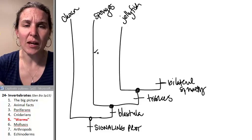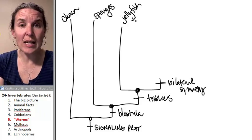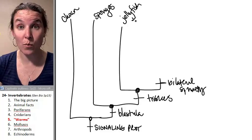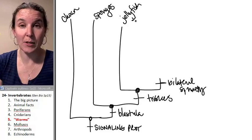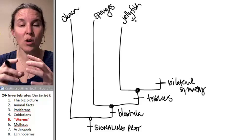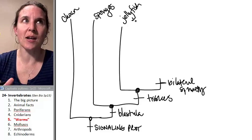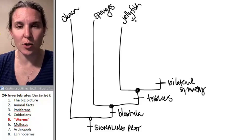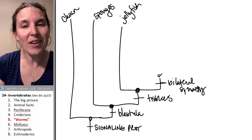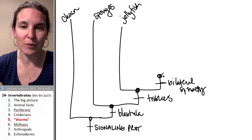Now, tell me — jellyfish, sea anemones, what kind of symmetry do they demonstrate? Radial symmetry. So sponges demonstrate no symmetry in their bodies, but everything from here on out is going to be bilaterally symmetrical.